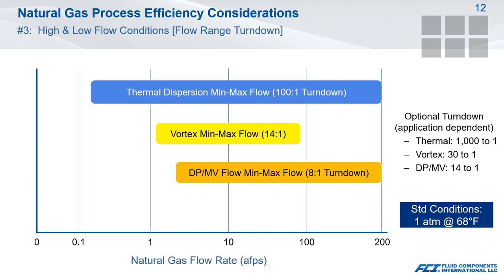Our third consideration is understanding how flow range turndown could impact our measurement. Many applications have varying demands — for example, you may see a very low flow pilot condition to keep a piece of equipment in standby mode that suddenly requires ramping up to 50% capacity or more. Properly sizing and selecting for these conditions requires clearly defined minimum and maximum flow values. As the graph illustrates, there is significant difference between the more common technologies used. The standard flow range turndown of thermal often exceeds the optional turndown capabilities of technologies such as vortex, differential pressure, and multivariable. There are also differences in the flow velocity that a given technology can measure.